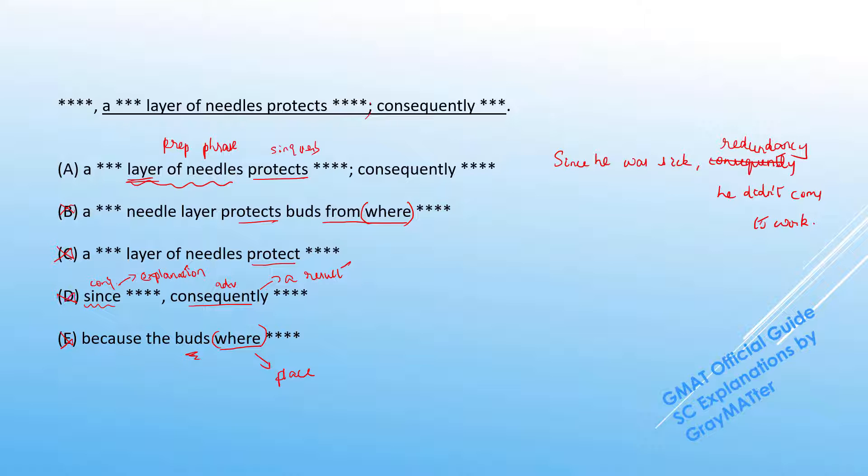So answer choice D is out by redundancy. We're left with A for alpha.